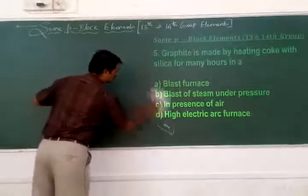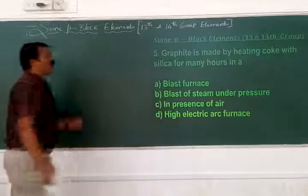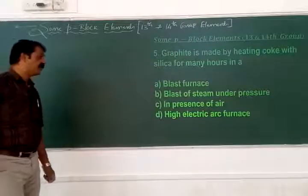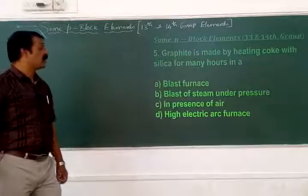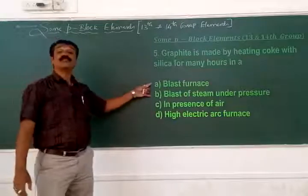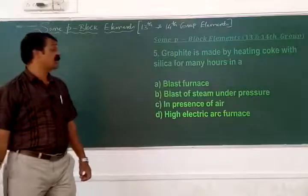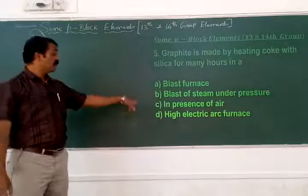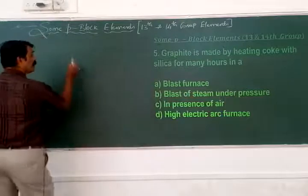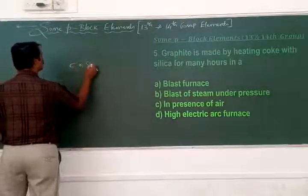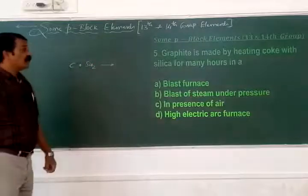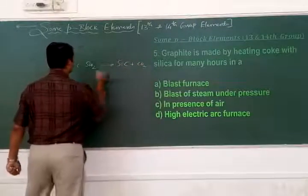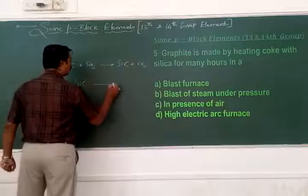Graphite is made by heating coke with silica for many hours in a high electric arc furnace. This is a metallurgical process involving very high temperatures. Coke (carbon) combines with silica, and during the process silicon carbide is first formed, along with the release of carbon monoxide or carbon dioxide.